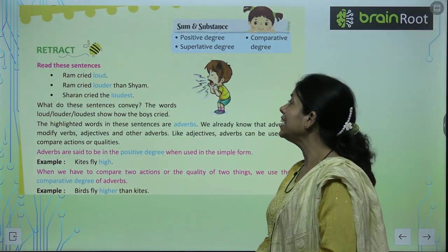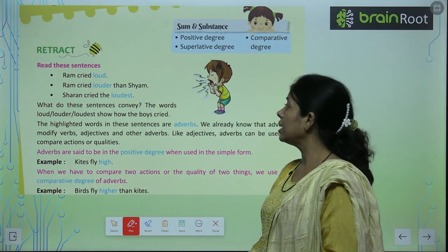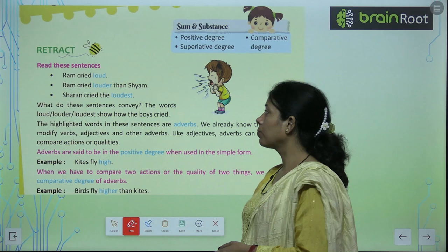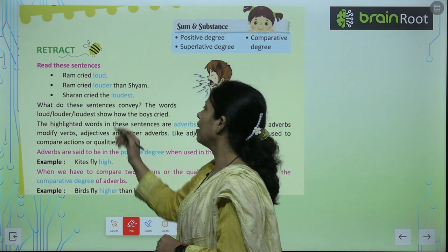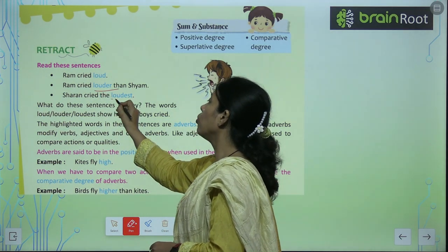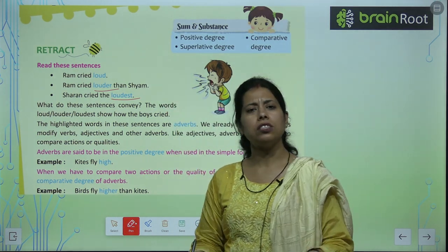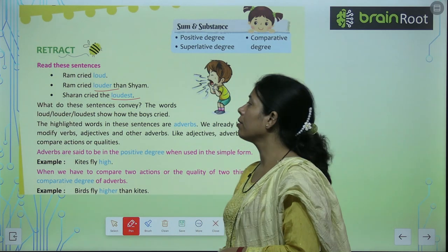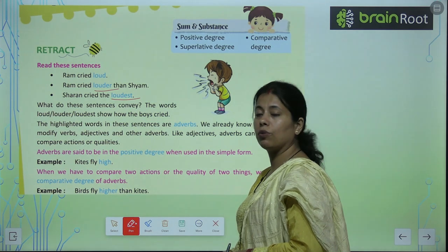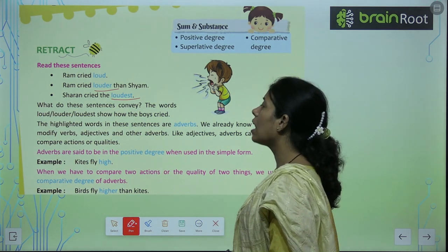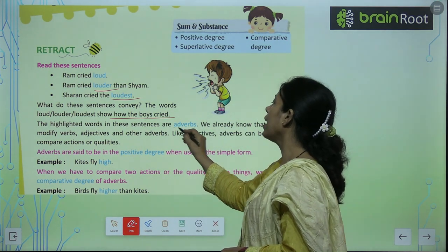Read these sentences. हम पीछे भी Comparison पढ़के आएं हैं. Sharon cried loudest. तो यहाँ पे क्या हो रहा है? एक Statement simple है, एक में Comparison है, और एक में Superlative Degree लगी है. तो यहाँ पे तीनों में Comparison हो रहा है. What do these statements convey? The words loud, louder, loudest show how the boys cried. The highlighted words in these sentences are Adverbs.